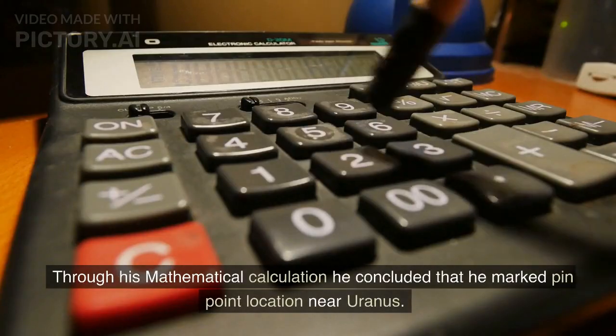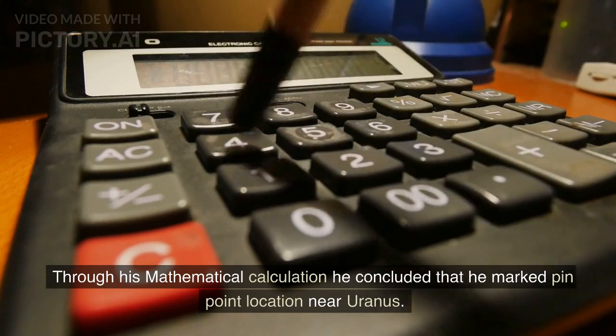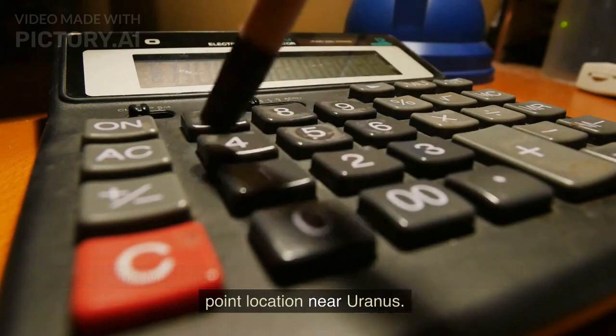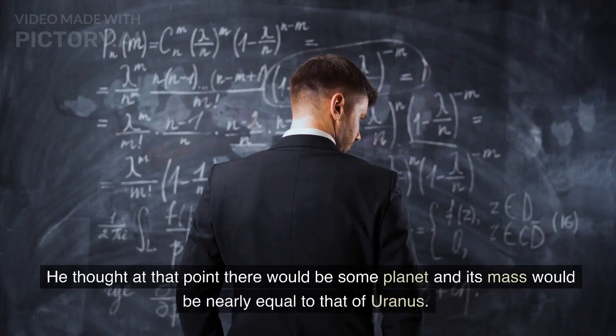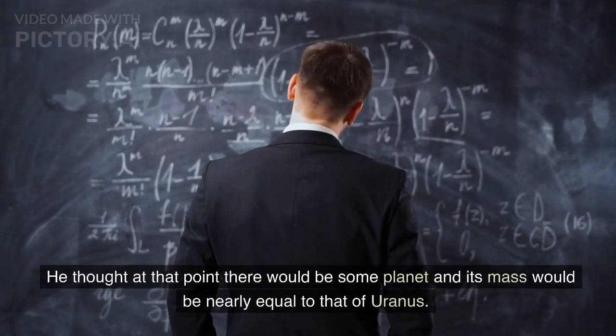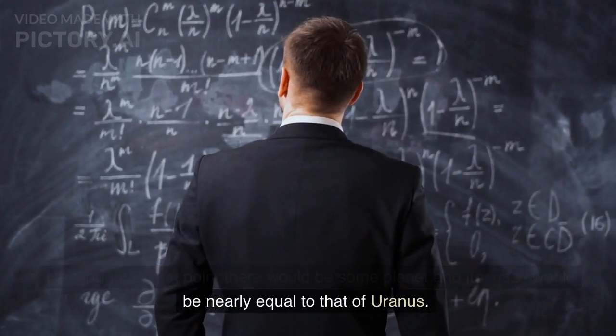Through his mathematical calculations, he pinpointed a location near Uranus. He thought at that point there would be a planet whose mass would be nearly equal to that of Uranus.